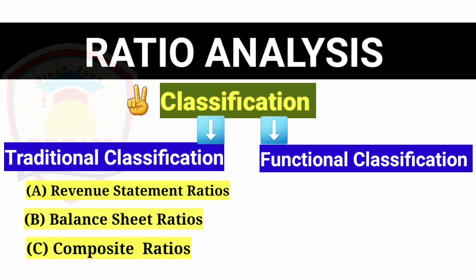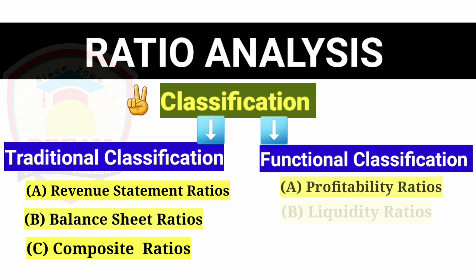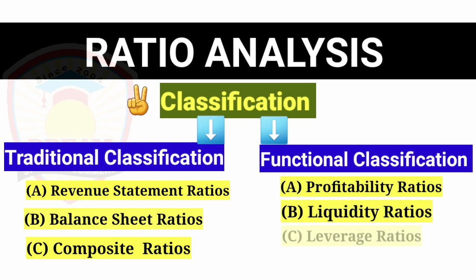In functional classification, there are four categories of ratios. First, profitability ratios. Second, liquidity ratios. Third, leverage ratios. And four, activity ratios.